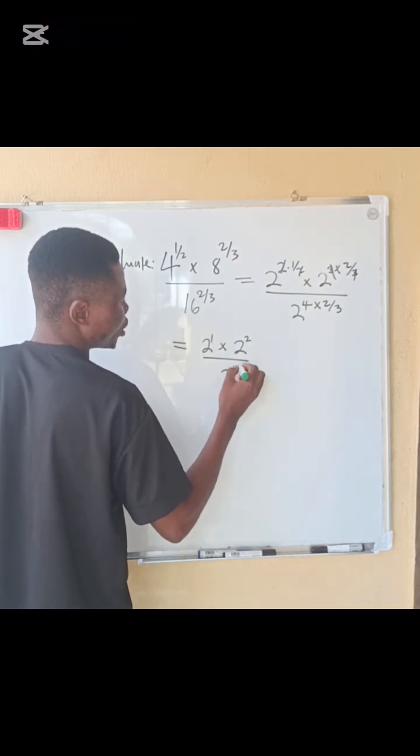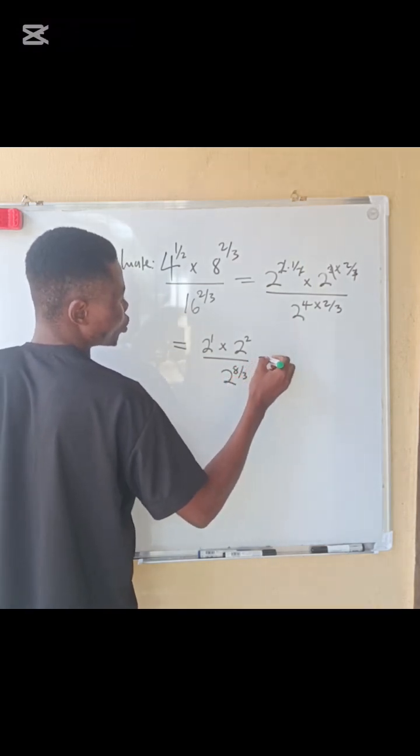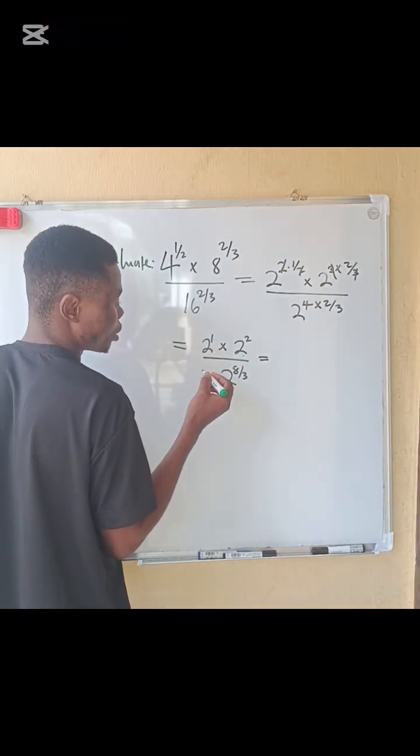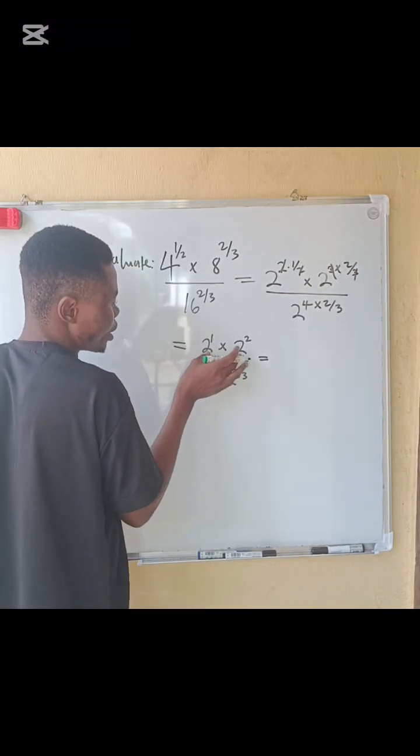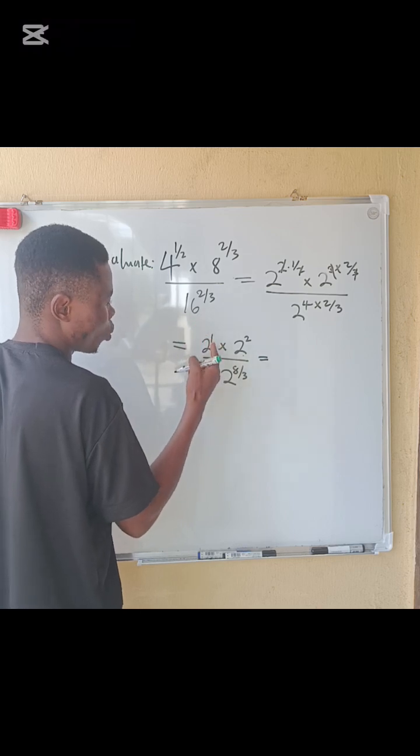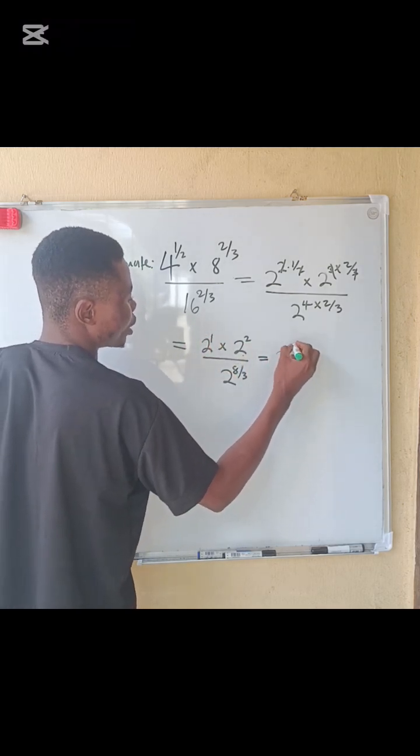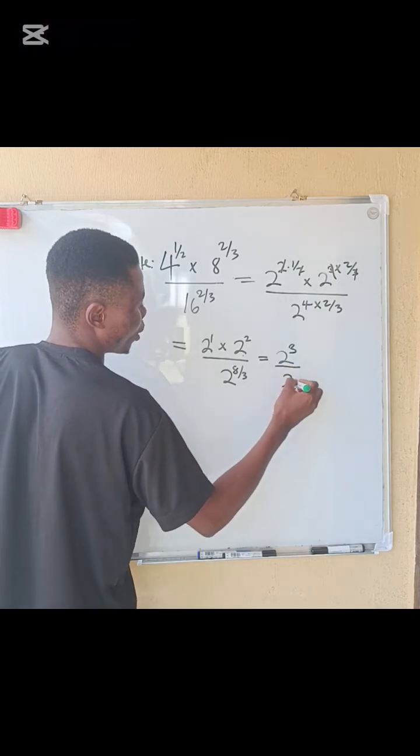We can apply the multiplication law of indices that says that when the bases are the same we add the power. So 1 plus 2 is 3, so you have 2 power 3 here, divided by 2 power 8 over 3.